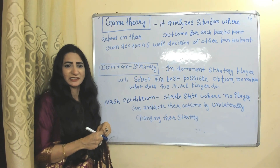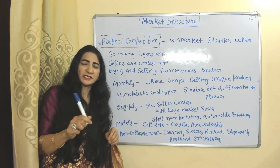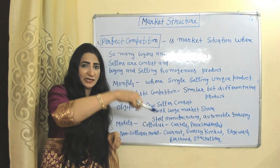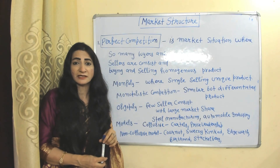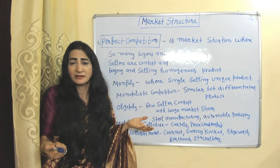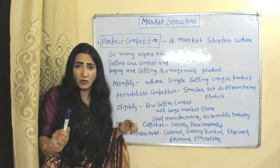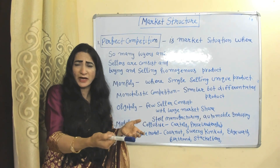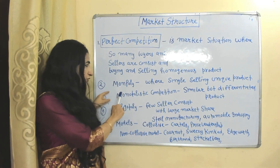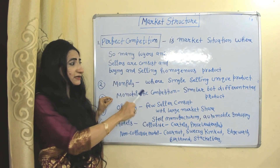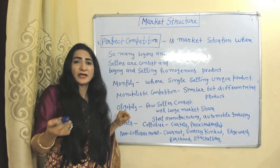Under market structure, perfect competition is a situation where many buyers and sellers buy and sell homogeneous products — for example, in an agriculture market, many farmers sell exactly the same crop. During the short run, a firm under perfect competition can receive super-normal profit, normal profit, or a minimum loss. During the long run, firms can freely enter and exit the market, so they will receive only normal profit.